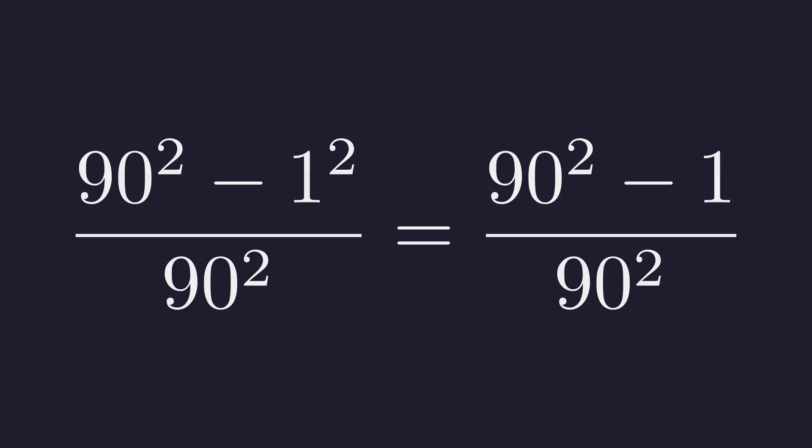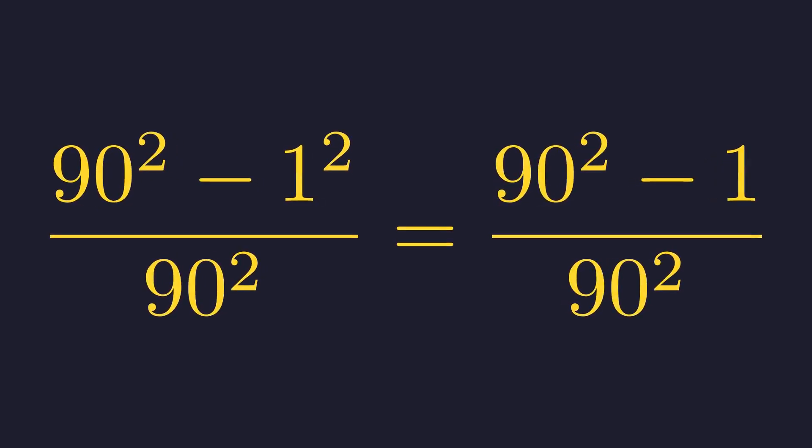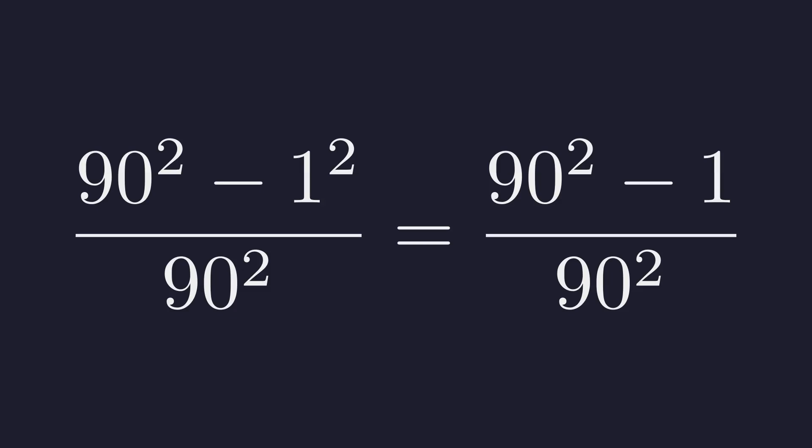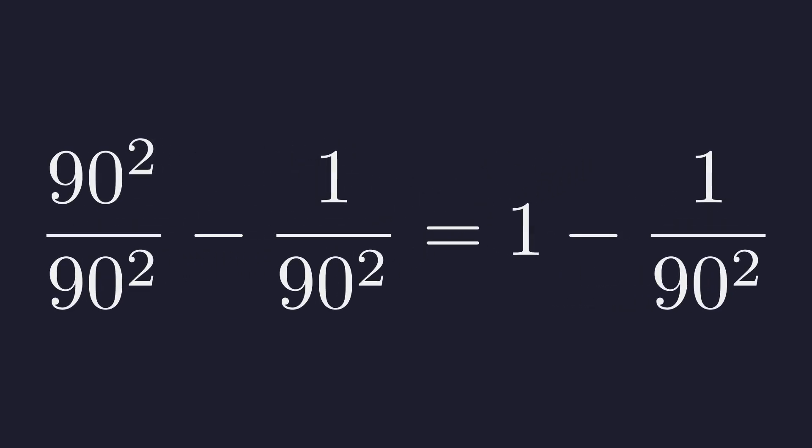This simplifies to (90 squared minus 1) all divided by 90 squared. We can split this fraction into two parts. This is equal to 1 minus the tiny fraction 1 over 90 squared. This result is clearly less than 1.